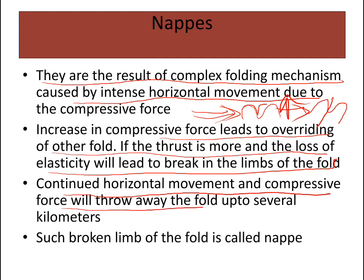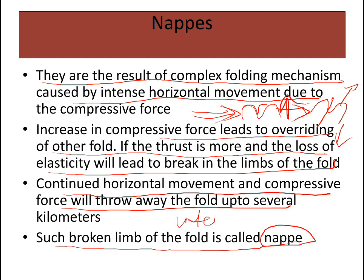The fold may lose its elasticity and break. The continued horizontal compressive force then throws the broken fold up to several kilometers — pushing it horizontally. Such a broken, displaced limb of the fold is called a nappe. A nappe is formed because of continuous, intensive compressive force that causes horizontal movement, breaks the fold, and displaces it.